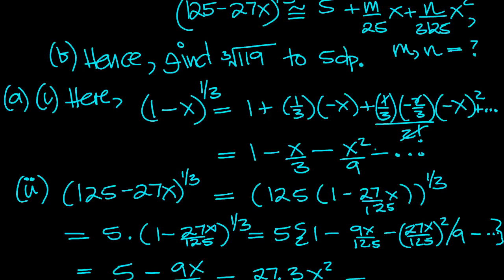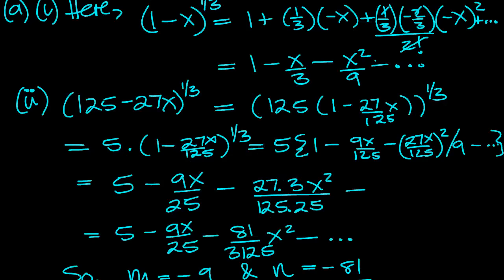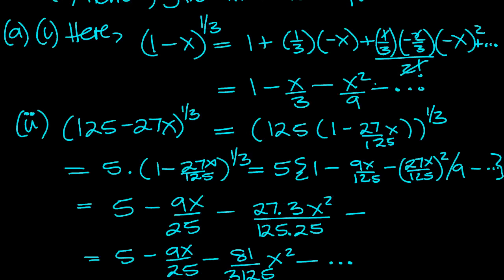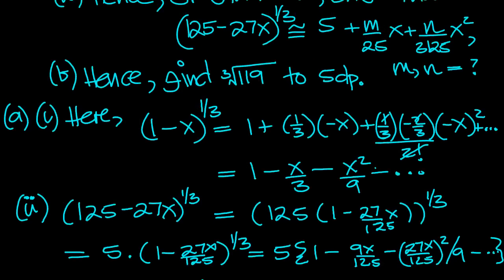Now it's a plus, so we need to carry the minus. So M is equal to minus 9, and N is equal to minus 81. Because they were written down as pluses, weren't they? So there's M and N then, from that problem there. And now the last part of the problem in part B. Hence find the cube root of 119 to 5DP.